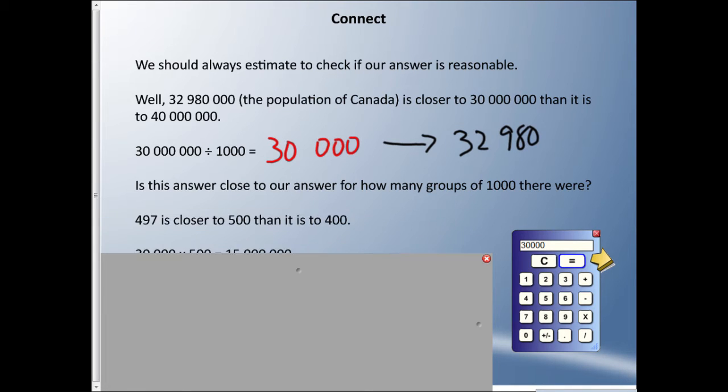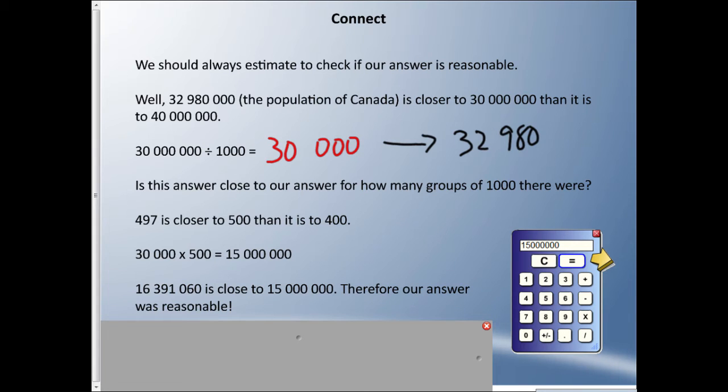497 cell phones per thousand people is closer to 500 than to 400. Let's double check—30,000 times 500, our estimate for cell phones, gets us 15 million. We were originally 16,391,060 and that's closer to 15 million. It's over a million off but it's still a pretty reasonable answer. An unreasonable answer would have been 160 million or 160,000. We have the same amount of digits and that's what's important.